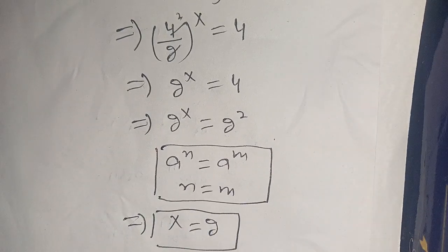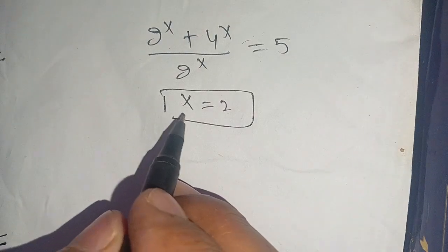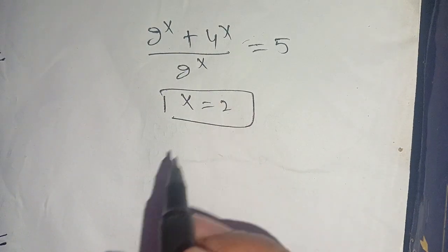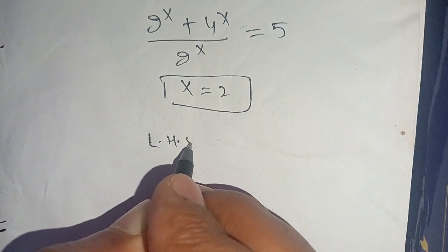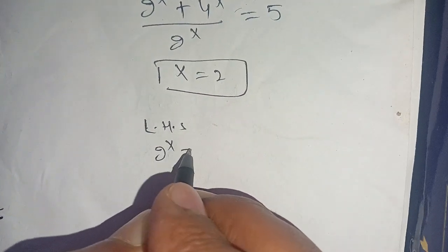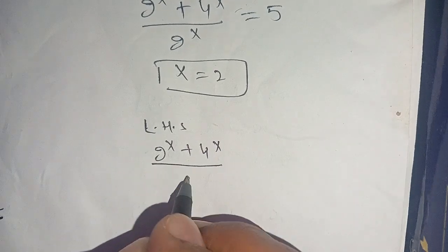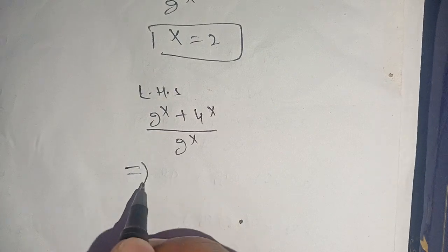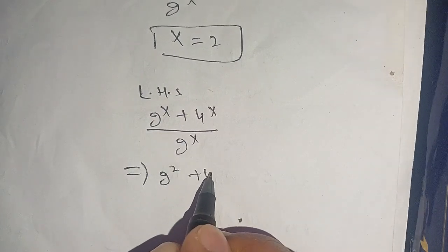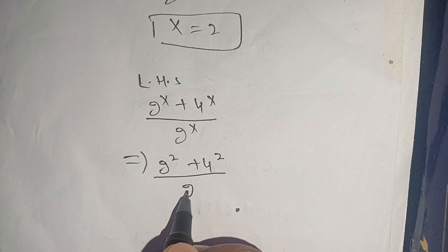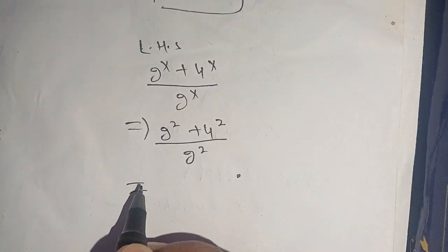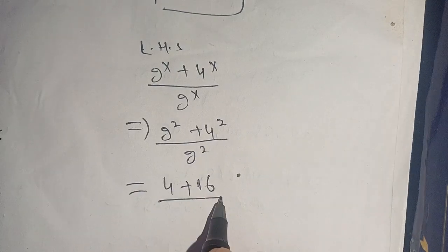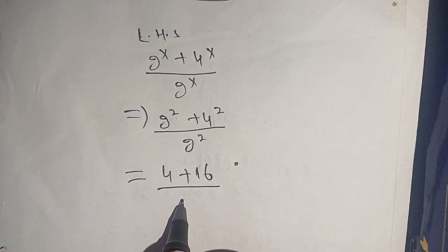Our final step is to verify whether x equals 2 satisfies our equation. Taking the left hand side: 2^x plus 4^x divided by 2^x. Substituting x equal to 2, we get 2 raised to power 2 plus 4 raised to power 2, divided by 2 raised to power 2. Now 2^2 becomes 4, and 4^2 becomes 16, divided by 2^2 which is 4.